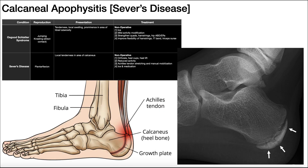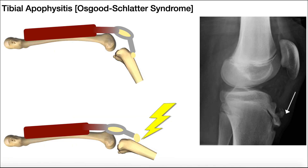There's another type of apophysitis called calcaneal apophysitis, also called Sever's disease. The most posterior part of the calcaneus develops as an apophysis — the calcaneal apophysis. The gastrocnemius and soleus, through the Achilles tendon, actually insert not only on the calcaneus but specifically on the calcaneal apophysis. We're going to make a similar argument to the tibial apophysitis — it's an overuse injury.